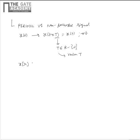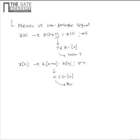Similarly, the discrete-time signal X(n) is periodic if X(n + N) = X(n) for every n. Here, capital N is the period of the signal and it should belong to ℤ minus {0}, meaning it should be a non-zero integer, and the minimum positive N which satisfies this condition is called the fundamental period of the signal.